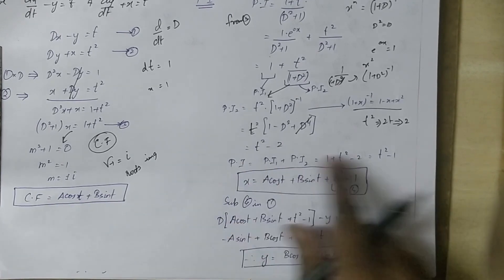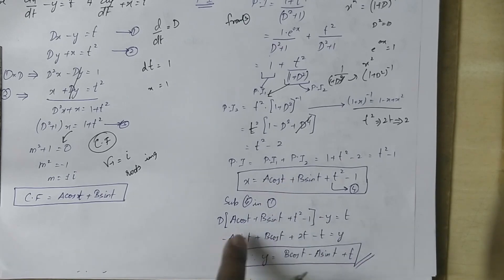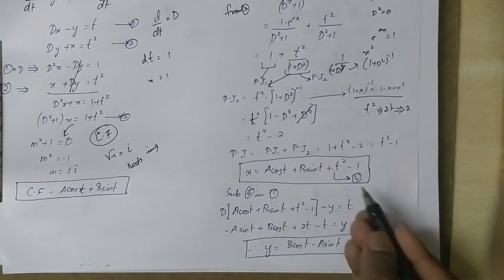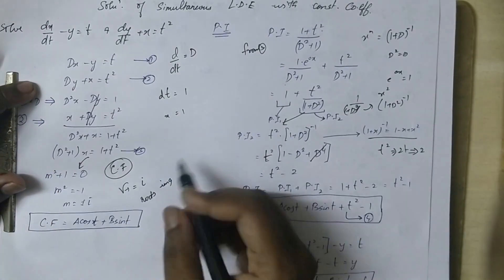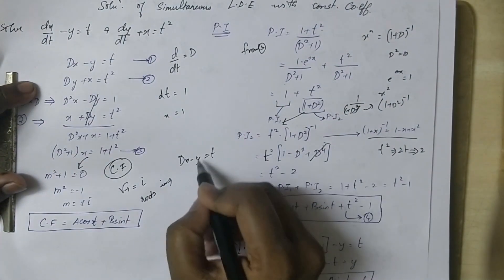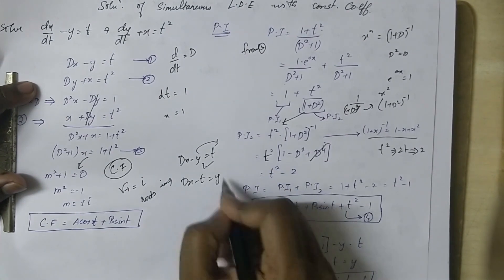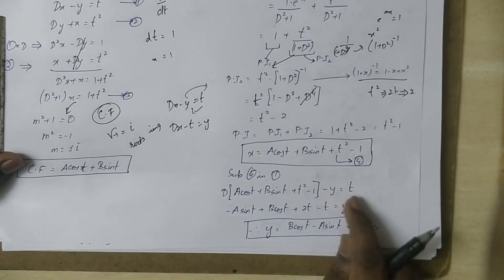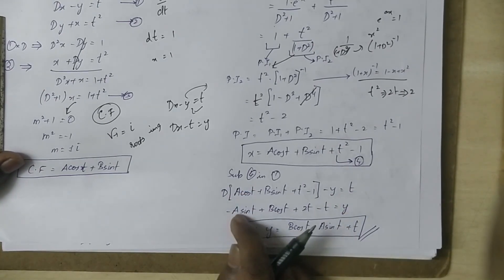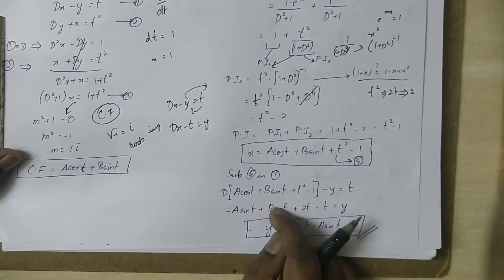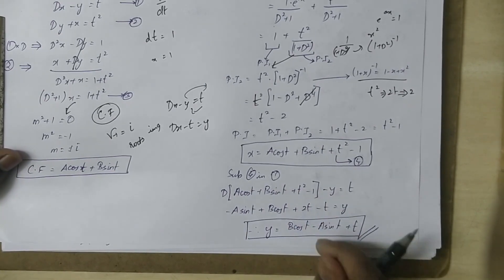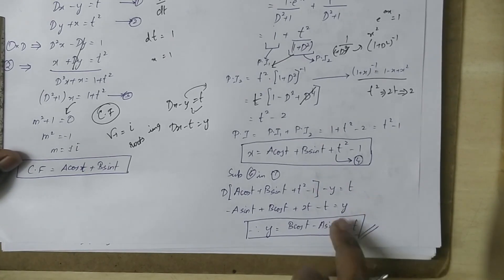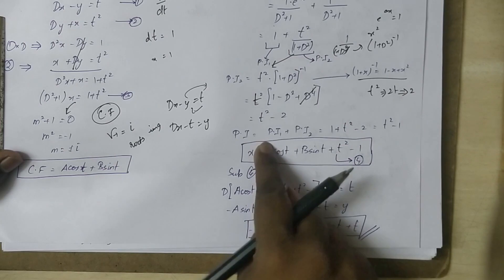So x equal to CF plus PI, which is a·cos(t) plus b·sin(t) plus (t squared minus 1). Now to find y, we substitute back into the first equation dx/dt minus y equal to t. Differentiating x: a·cos(t) differentiates to minus a·sin(t), b·sin(t) differentiates to b·cos(t), and 2t minus 0. Then y equal to dx/dt minus t, giving us the final answer for x and y.